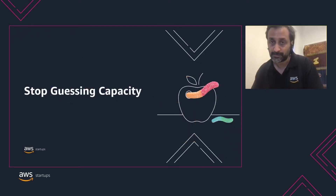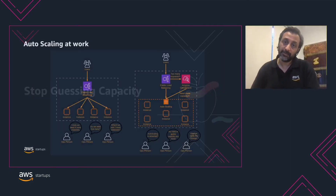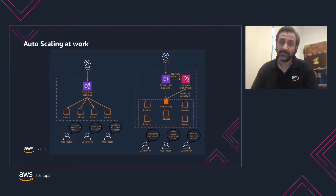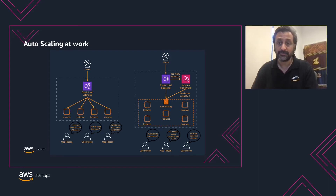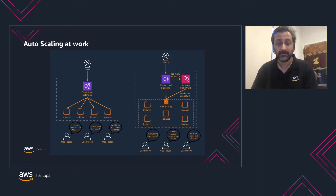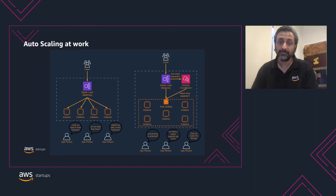We now move on to the fourth principle. A common cause of failure in workloads is resource saturation, which is when the demands placed on a workload exceed its capacity. In AWS, you can monitor demand and workload utilization, and automate the addition or removal of resources to maintain the optimal level and satisfy demand without over- or under-provisioning. You can also provision capacity automatically based on demand by identifying the right metric or KPIs. This strategy can be applied to areas like CPU or memory for EC2, but can also be applied to container tasks or even database throughput.